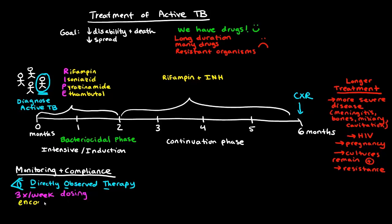There are logistic strategies that help assure compliance — for example, having convenient office hours so patients can come in after work. Providing incentives and enablers such as meals or travel vouchers to come to the clinic also helps. Strategies for simplifying the regimen include three-times-a-week therapy, and there are also some combination medications available in some countries that may enhance compliance.